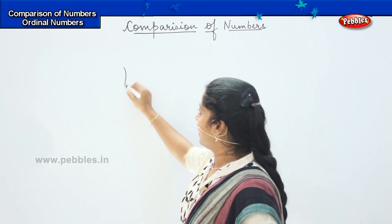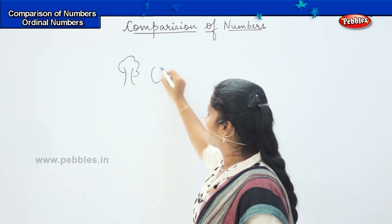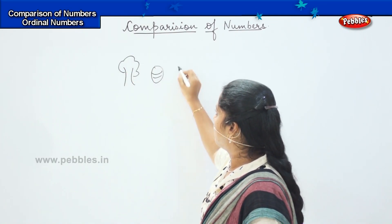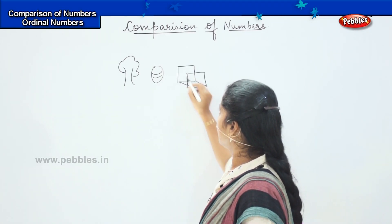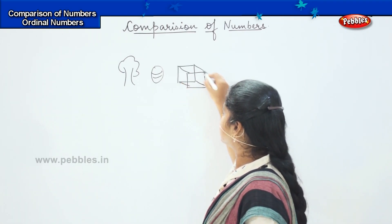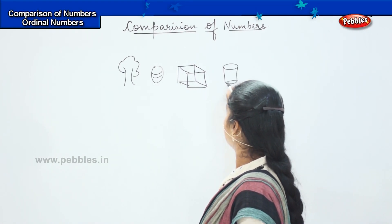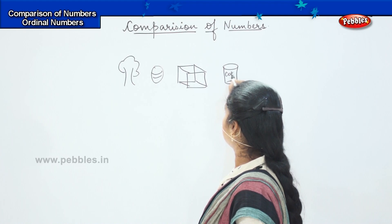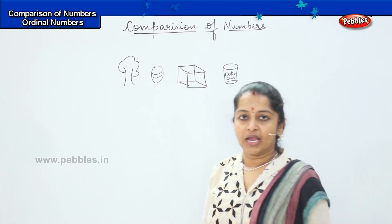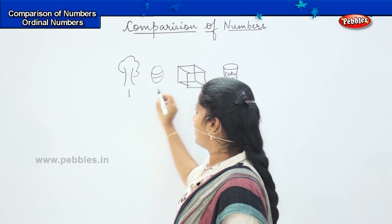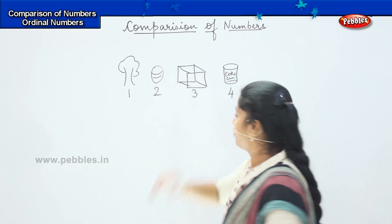For example, if I have given you a tree, a ball, a box, and a Coke can, I will be numbering them as one, two, three, and four.